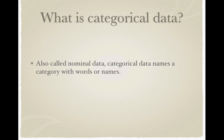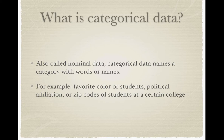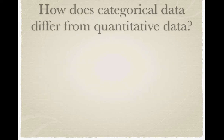For example, in a survey someone might be asked questions like what is their favorite color, what is their political affiliation, what is their gender, what is their zip code — things like that. One big thing we have to make sure we can do is differentiate between categorical and quantitative data.